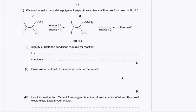Part B: K is used to make the addition polymer perspex. Part B1: identify L and state the conditions required for reaction 1. The acid group converts to an ester group (C=O), so L must be an alcohol. Since OCH₃ is added and contains only one carbon atom, L must be methanol. The conditions for esterification are an acidic catalyst such as H₂SO₄ plus heat under reflux.